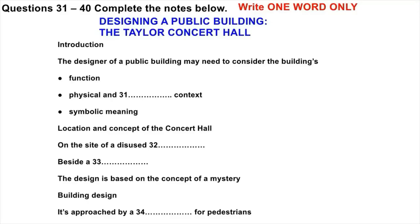The second thing the architect needs to think about is the context of the building. This includes its physical location, obviously, but it also includes the social meaning of the building — how it relates to the people it's built for. And finally, for important public buildings, the architect may also be looking for a central symbolic idea on which to base the design — a sort of metaphor for the building and the way in which it is used.